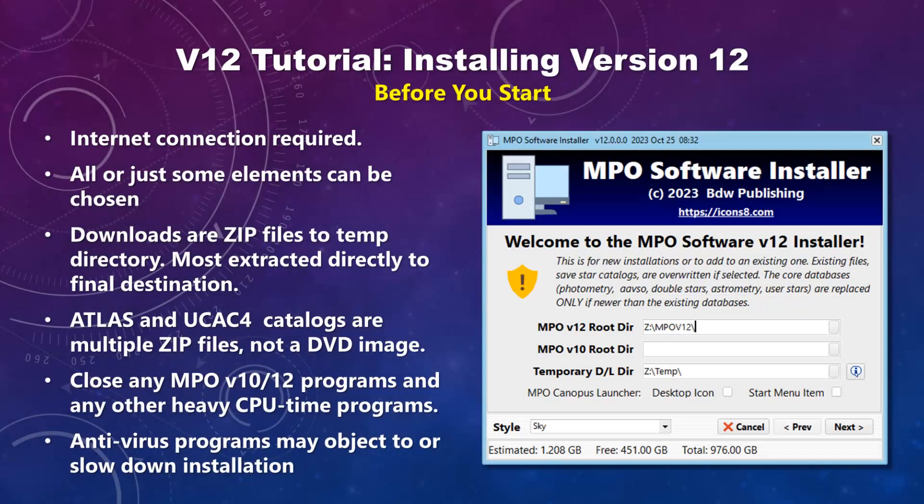To install version 12 you must have access to the internet, since files are downloaded as necessary from a secure website. All zip files are downloaded to a temporary directory; most will be extracted directly to the final destination. The exceptions are for the Atlas and UCAC4 catalogs, which are multiple zip files that are processed one at a time.